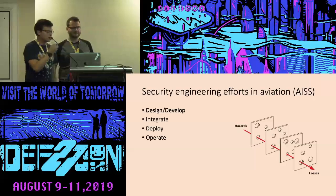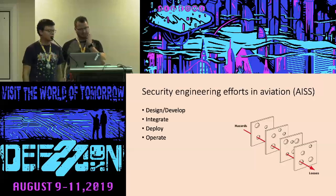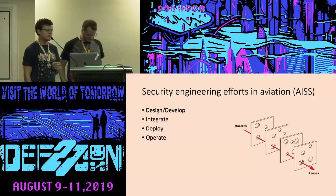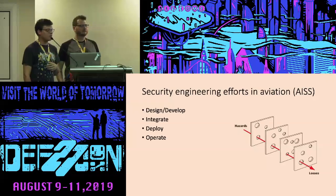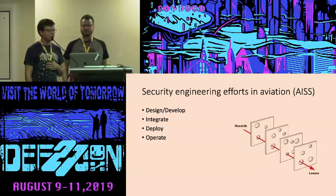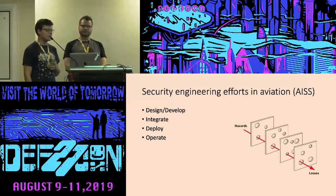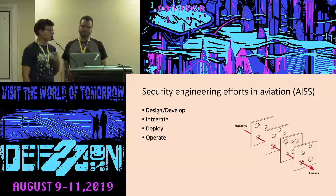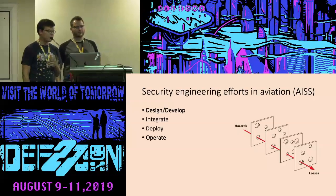Going into more detail about the security engineering efforts in aviation: this picture represents the model where you normally have more than one control in place. During the design and development phase, you define your criticality of your system, what interfaces you have, how exposed the system is going to be, and where it's allocated in the architecture. Then you define what controls you need — for example, for certain systems you need a SAL 3 and SAL 2 security assurance level implementation, meaning two independent controls. This involves requirements capturing, risk assessments, hardware and software design.